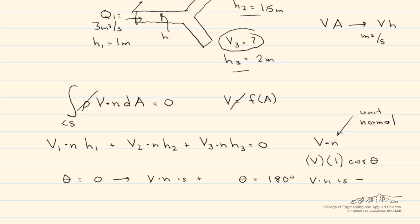First we have to find our V1. Our Q1 is equal to V1 times H1 times that unit width, which we can call 1 meter. That leaves V1 equal to 3 meters per second.